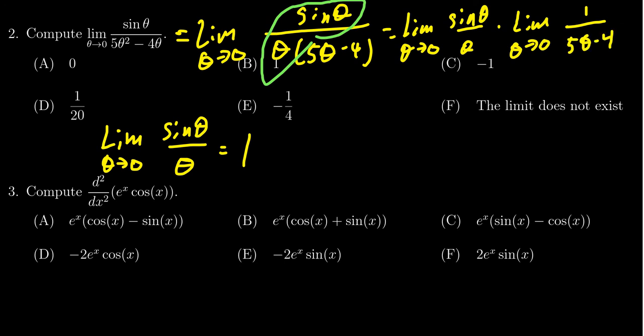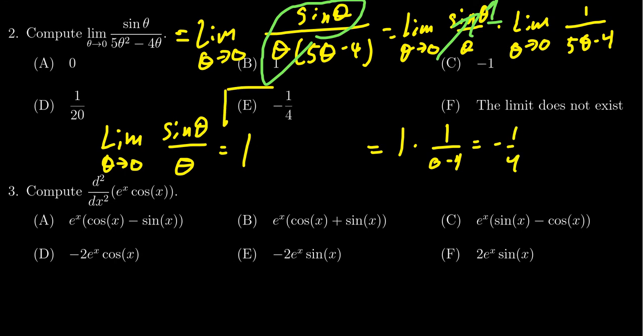For the first one, you see that this limit is going to go towards 1. And in the second limit, if we plug in theta equals 0, we don't get the indeterminate form we had anymore. We end up with 1 times 1 over 0 minus 4. This becomes negative 1 fourth, and so we see that the correct answer is E.